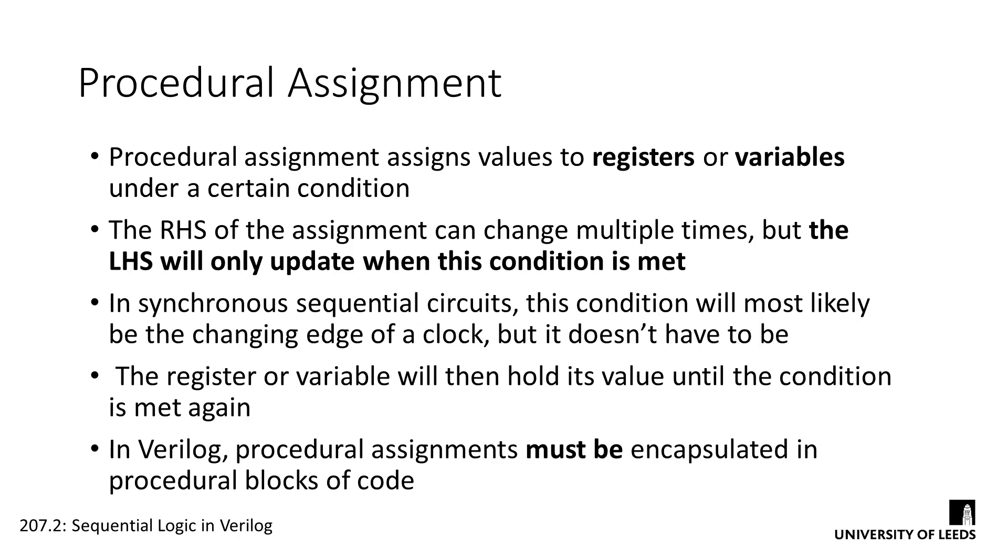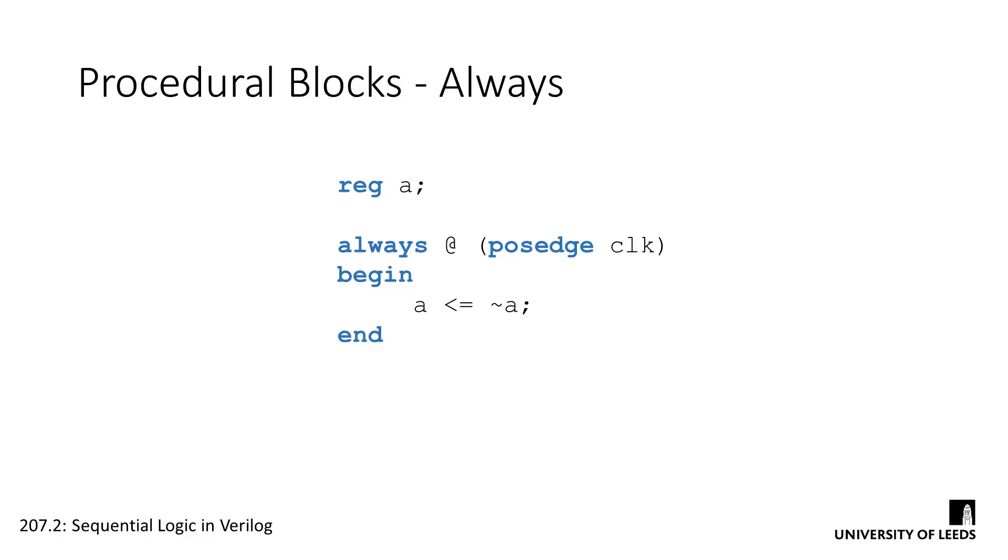There are two key types of procedural block that we're going to look at today, the always block and the initial block. The always block is the most common procedural block. It's the main way of describing what events should occur under certain conditions. The structure of an always block is relatively simple, as you can see here.